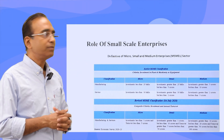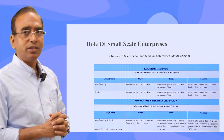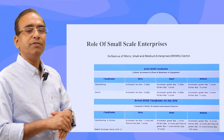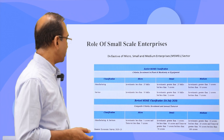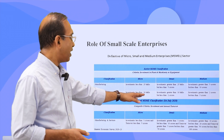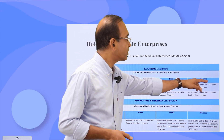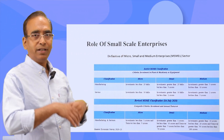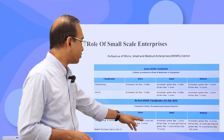India defines small-scale industries by the size of investment, whereas the rest of the world uses the number of people employed. Under the earlier definition, micro enterprises had investment up to ₹25 lakhs (manufacturing) and ₹10 lakhs (services); small was ₹25 lakhs to ₹5 crores and ₹10 lakhs to ₹2 crores; medium was ₹5 crores to ₹10 crores and ₹2 crores to ₹5 crores. In 2020, we revised the MSME classification, increasing thresholds from ₹25 lakhs to ₹1 crore for micro, up to ₹5 crores.